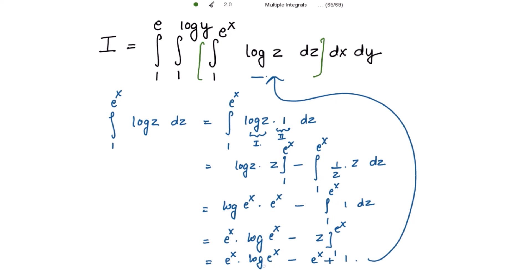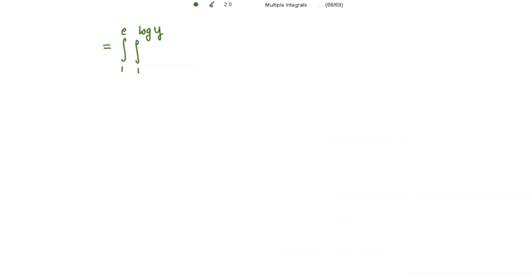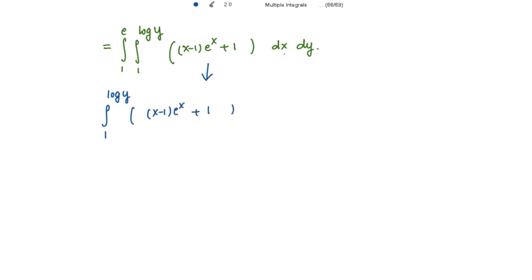We can write the result as e^x · x minus e^x plus 1, which factors as e^x(x - 1) + 1. Substituting this back, the outer integrals become the integral from 1 to e and from 1 to log(y) of [x minus 1]·e^x plus 1, dx dy.